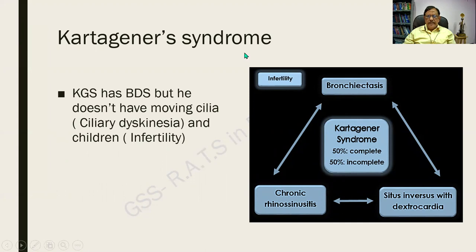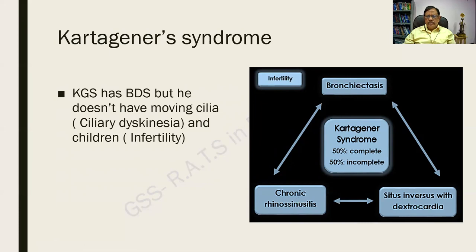Kartagener's syndrome has a triad which consists of: bronchiectasis, situs inversus — one of the most important defects — and recurrent rhinosinusitis. These constitute Kartagener's syndrome. Along with that, there is infertility.